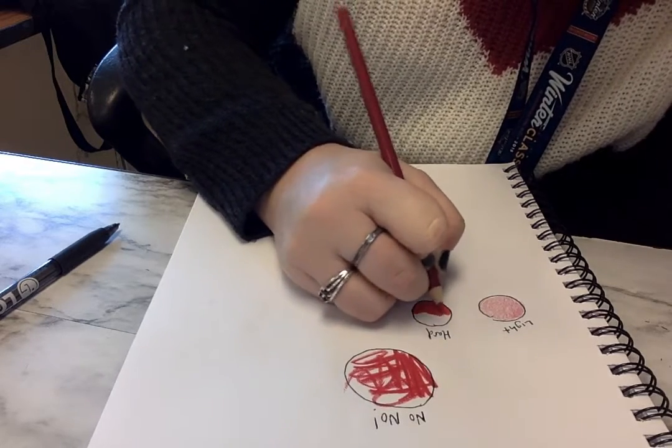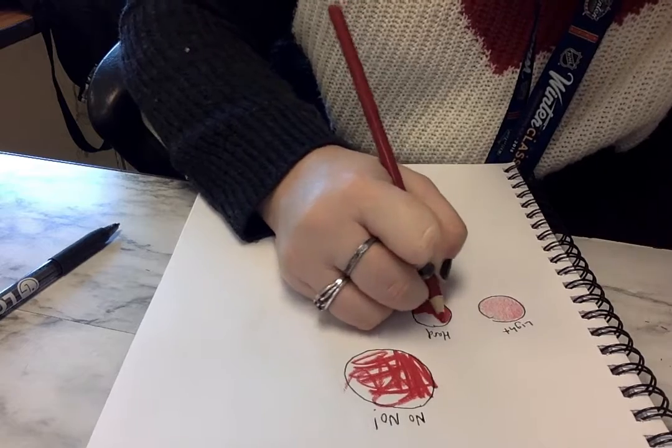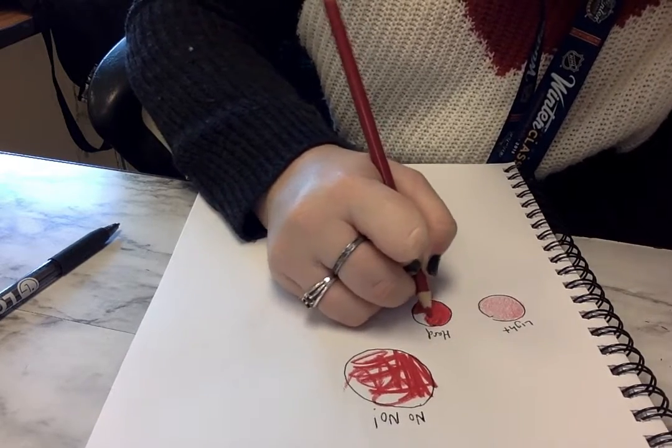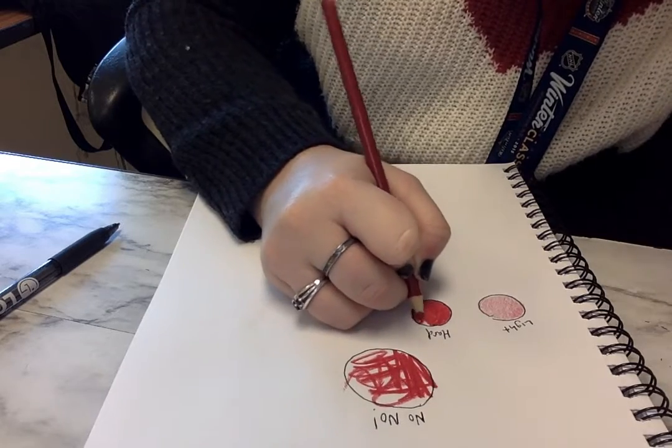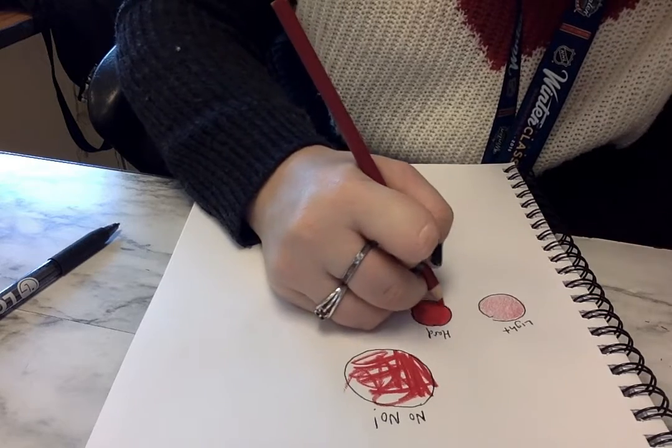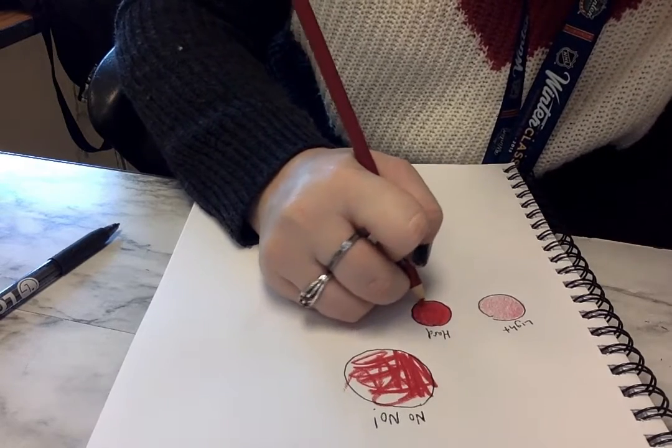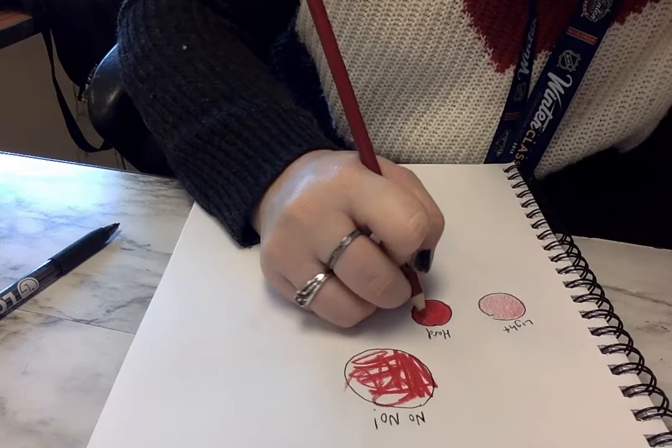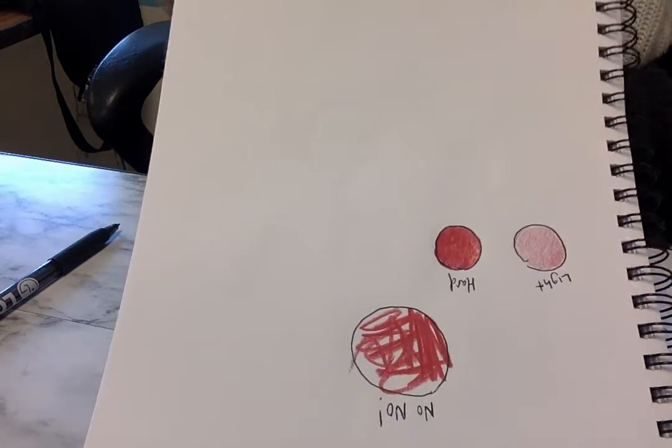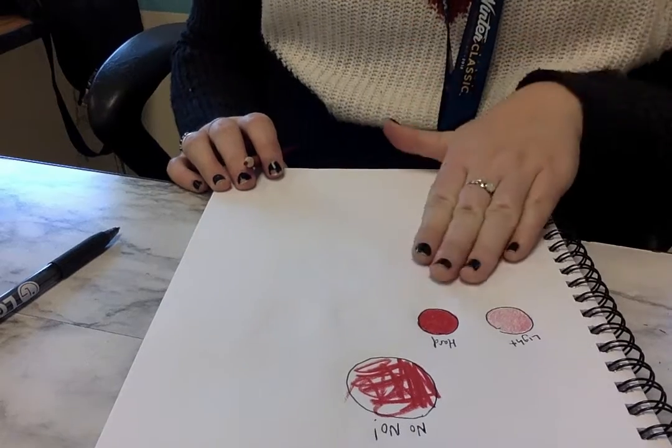You can already tell, even from far away, how much stronger the color is when you do hard pressure with circular motions. That's what's going to make it look like it's printed, really smooth. Hard pressure and circular motions.